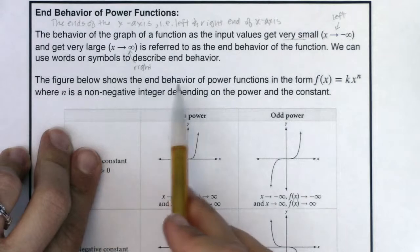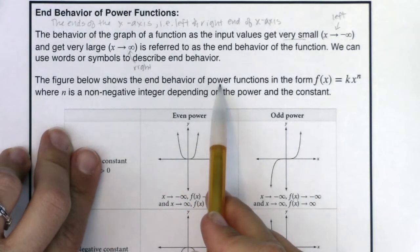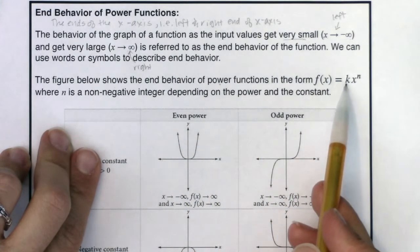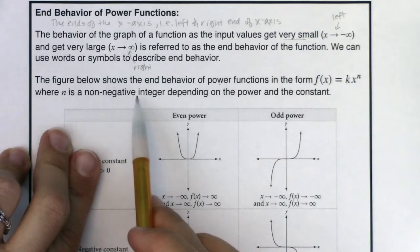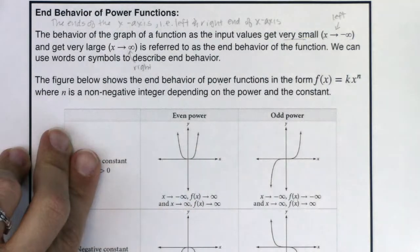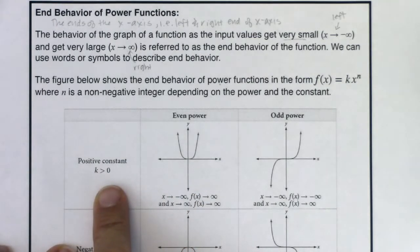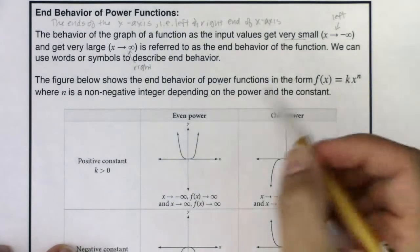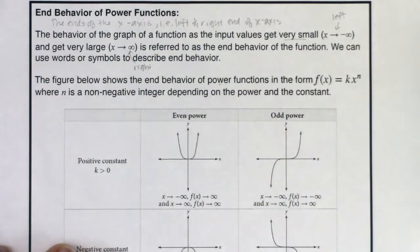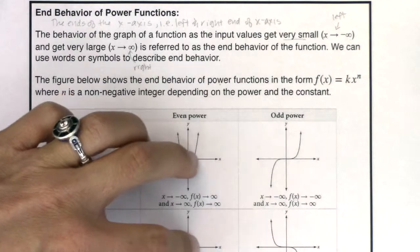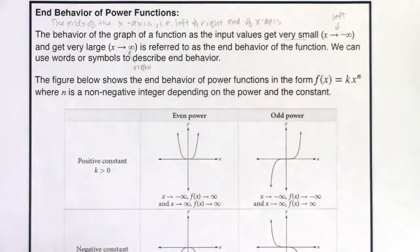The figure below shows the end behavior of power functions — functions of the form kx to the n, some coefficient times a power, where n is a non-negative integer. Let's look at a couple of cases. When we have a positive constant — when k is positive — these are broken up into: did you have an even power or an odd power?